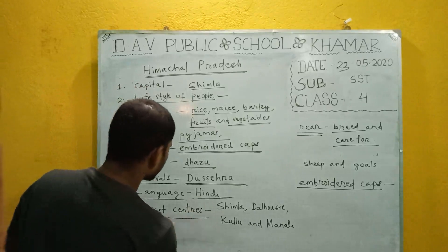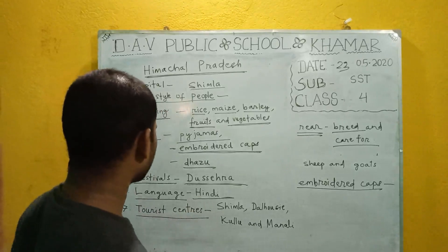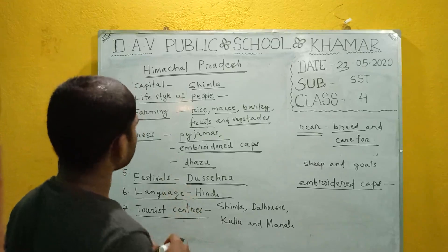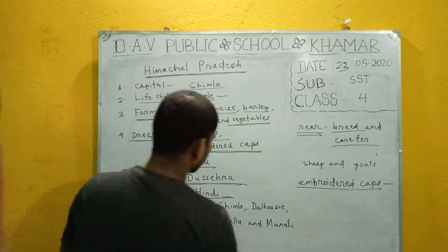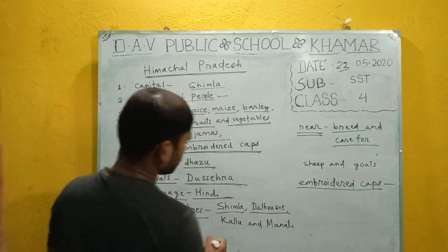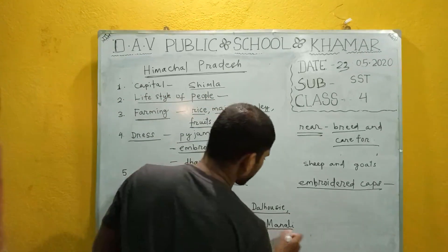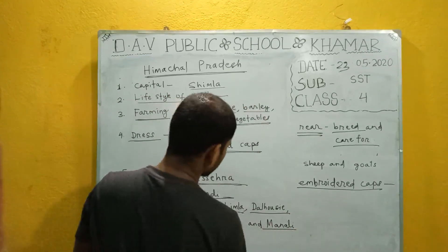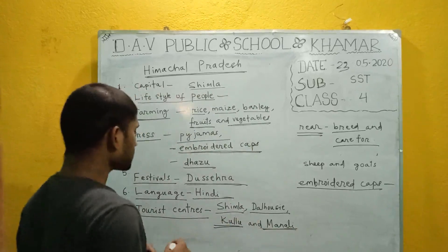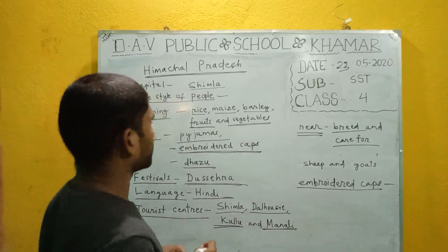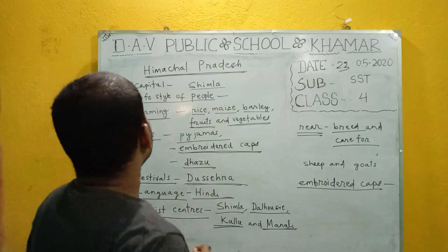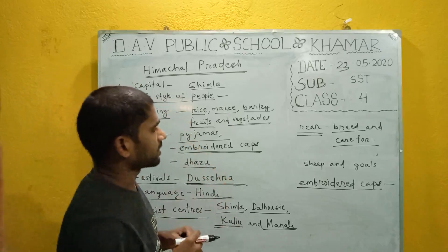The different tourist centers in Himachal Pradesh are Shimla, Dalhousie, Kullu, and Manali. These are the famous tourist places that lie in Himachal Pradesh.